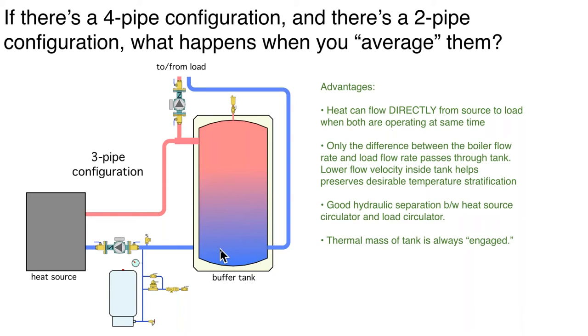The flow that goes through the tank is going to be the difference between the heat source flow rate. And in the upper portion of that tank, we're going to have lower flow velocities.